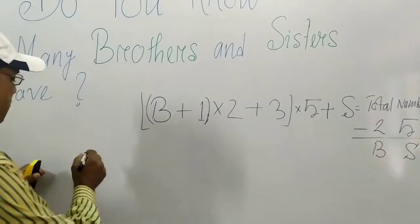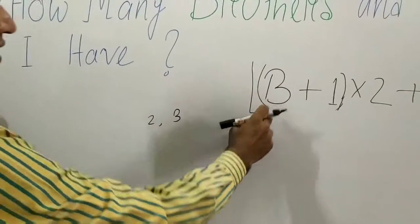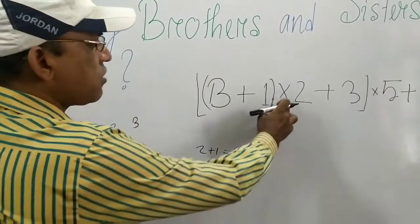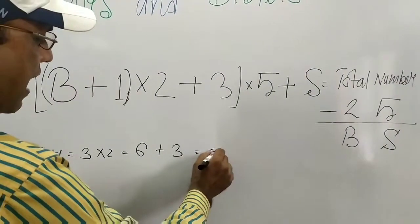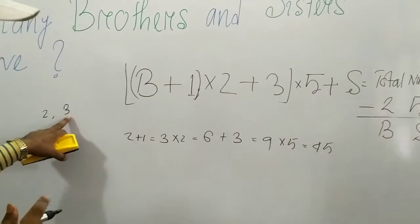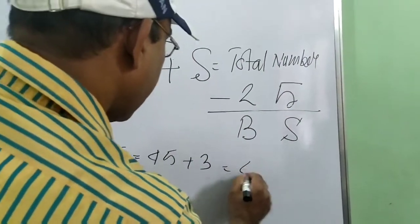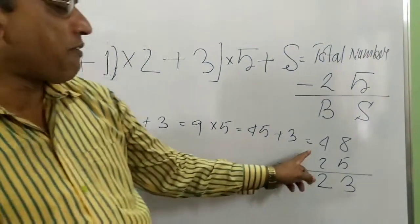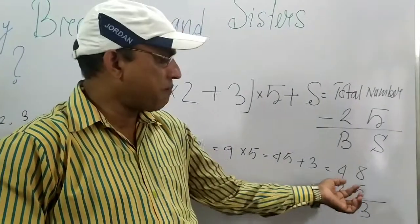Now let us take one example. Suppose brother is 2 and sister is 3. Using this formula: 2 plus 1 is 3, 3 into 2 is 6, 6 plus 3 is 9, 9 into 5 is 45. Then adding 3 sisters: 45 plus 3 equals 48. So 48 minus 25 gives 23 — 2 brothers, 3 sisters. So 25 is the main magic — you can't reveal it when you apply this formula.